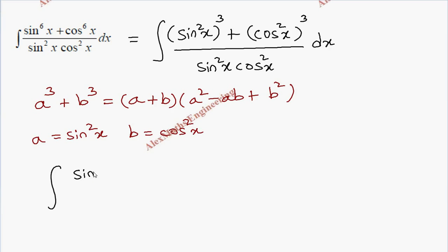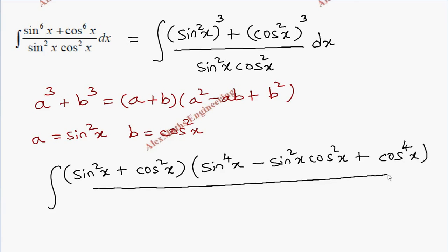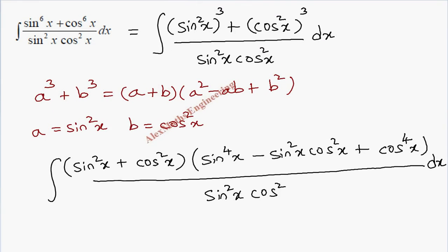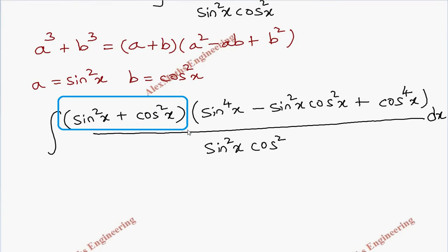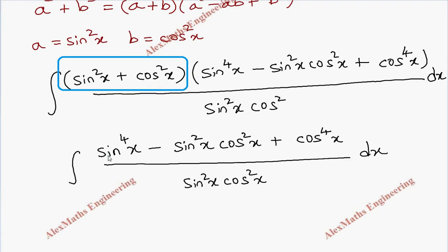Substituting, the numerator becomes (sin²x + cos²x)(sin⁴x − sin²x · cos²x + cos⁴x), with denominator sin²x · cos²x dx. Using the trigonometric identity sin²θ + cos²θ = 1, the first factor becomes 1. So now in the numerator we have 3 terms and we are going to divide individually, taking it as 3 separate integrations.